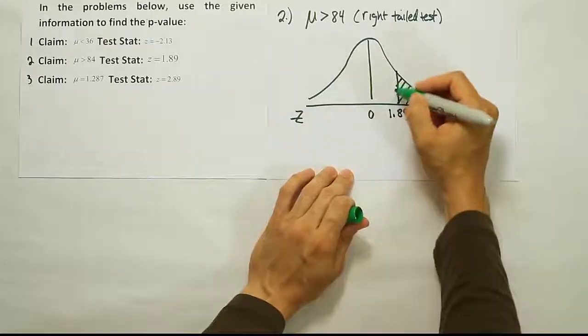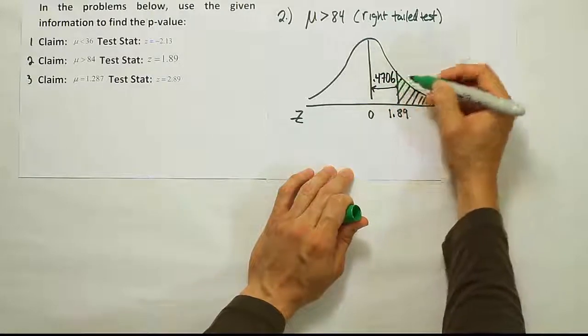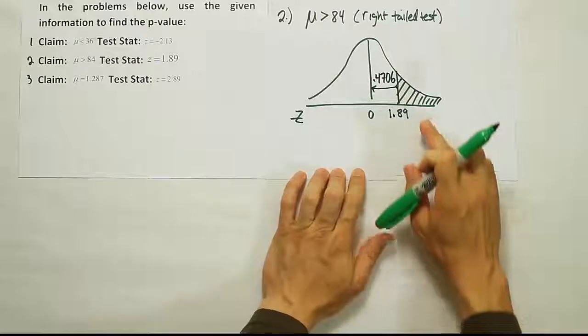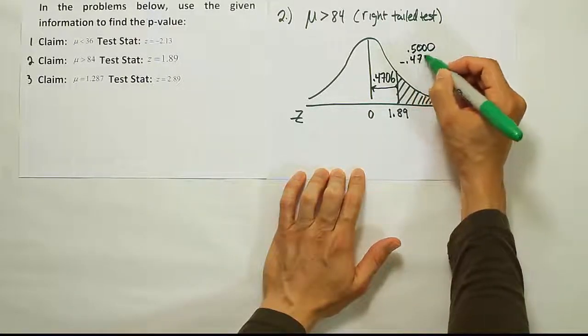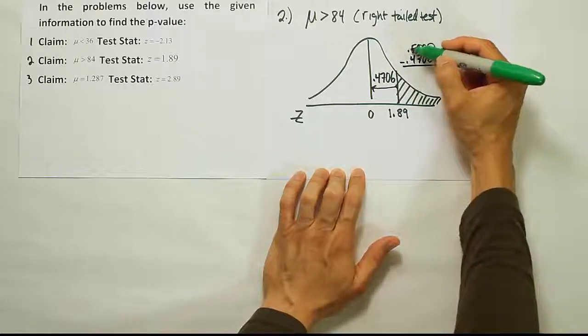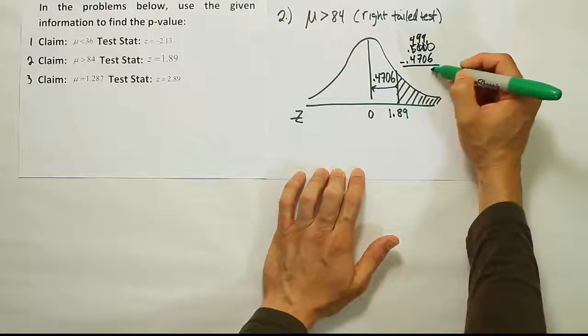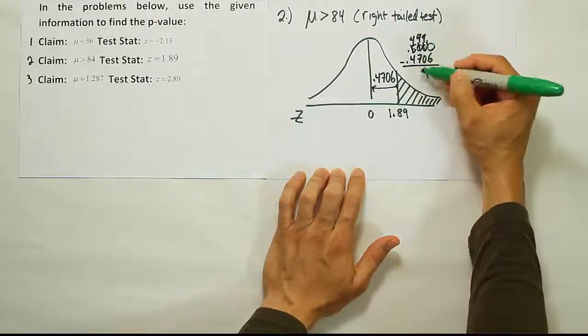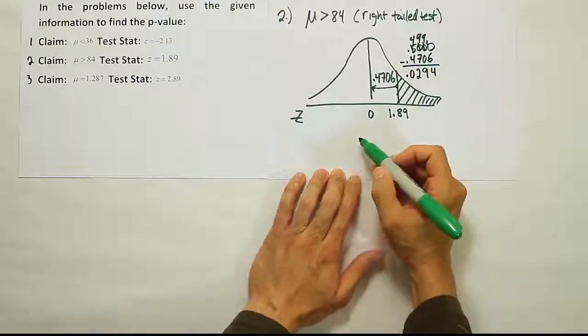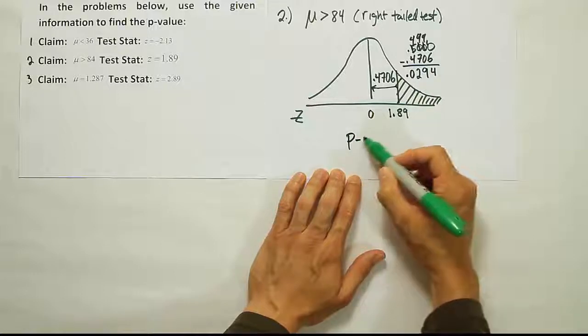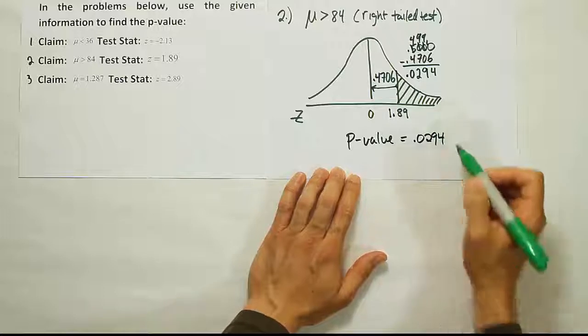Okay, so we found our area from here to here to be 0.4706. All right, that's not the area we're looking for. We need to find the tail area. So we do 0.5 minus 0.4706. Okay, so a little old-school borrowing here. We get 10 to take away 6 is 4, 9 to take away 0 is 9, 9 to take away 7 is 2, 4 to take away 4 is 0. So we get the answer 0.0294. That means our p-value is equal to 0.0294, or close to 3%.